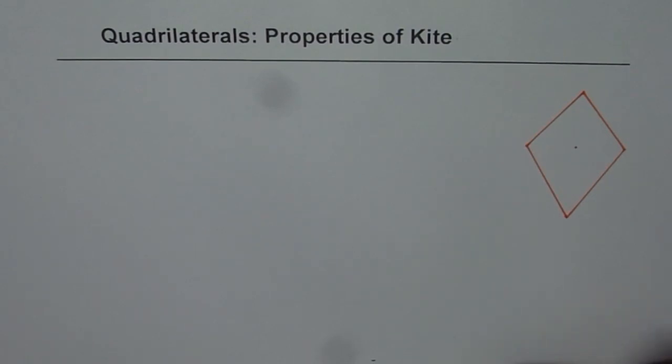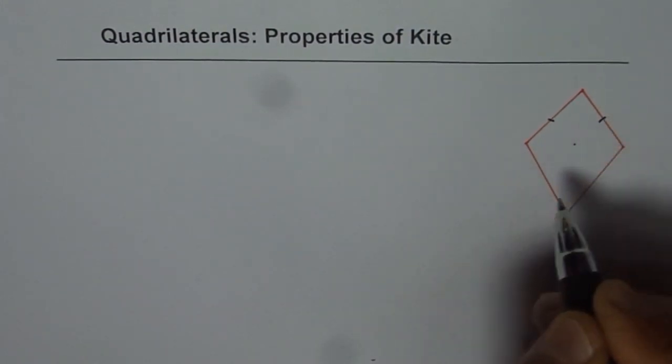It's a quadrilateral since it is a four-sided figure. Now what is so special about a kite? It has two pairs of equal sides.